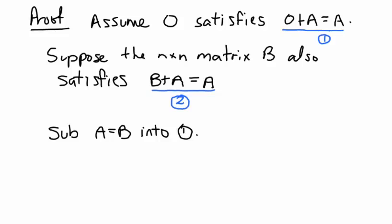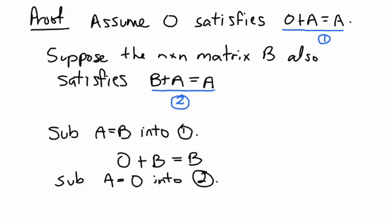Equation one holds for all n by n matrices A, so substituting A equals B gives us O plus B equals B. Similarly, equation two holds for any n by n matrix A, so substituting A equals O gives us B plus O equals O. Now we have everything we need to finish the proof.